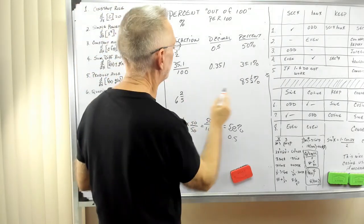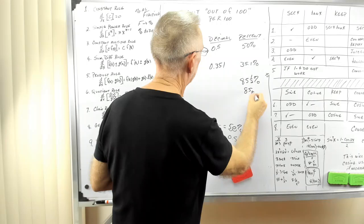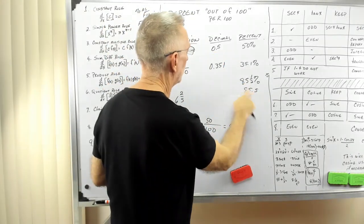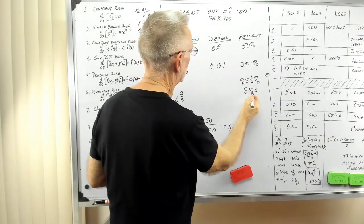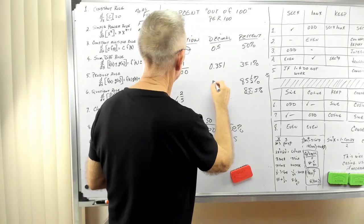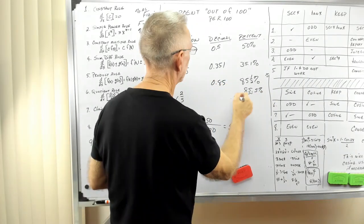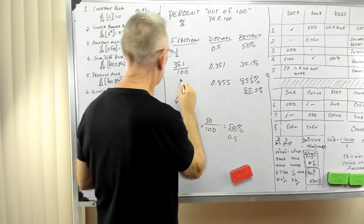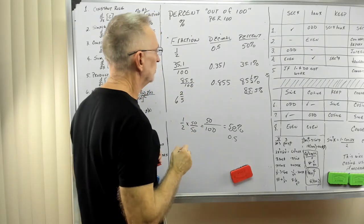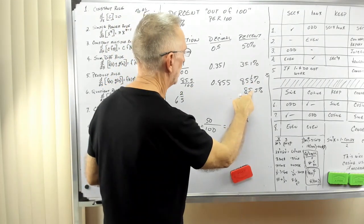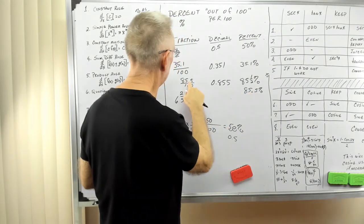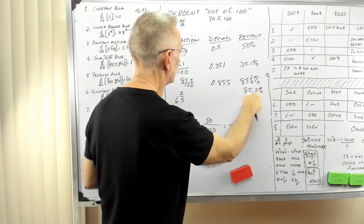85.5%, which is 85.5. We've already seen that half is 0.5. Now then, if I change that to a decimal, move it two places to the left. So that's 0.855. And that's 85.5 per 100. So 85.5% is 85.5, drop the percent per 100.